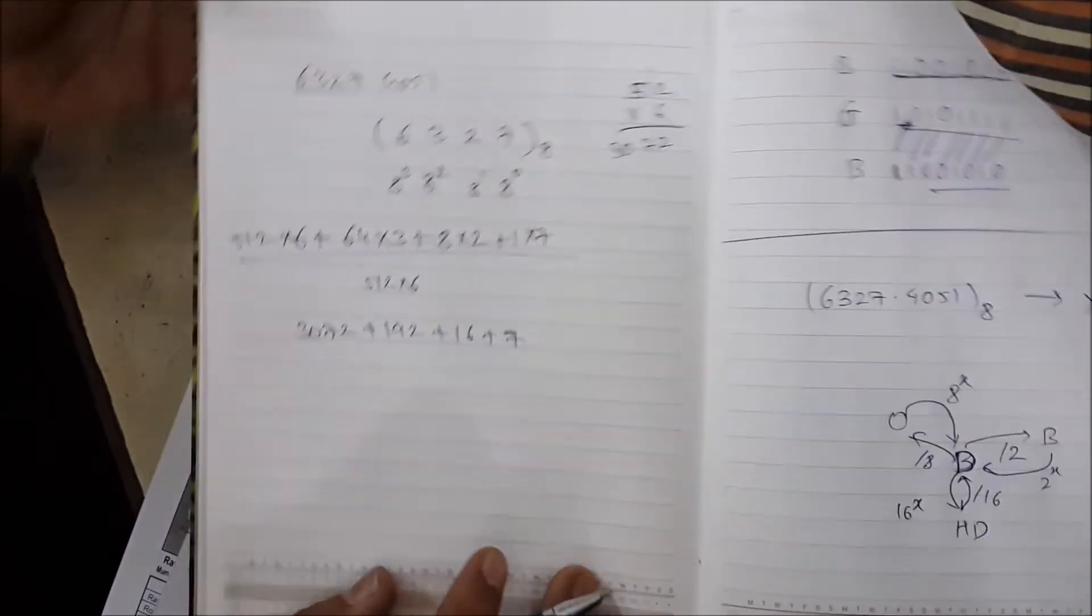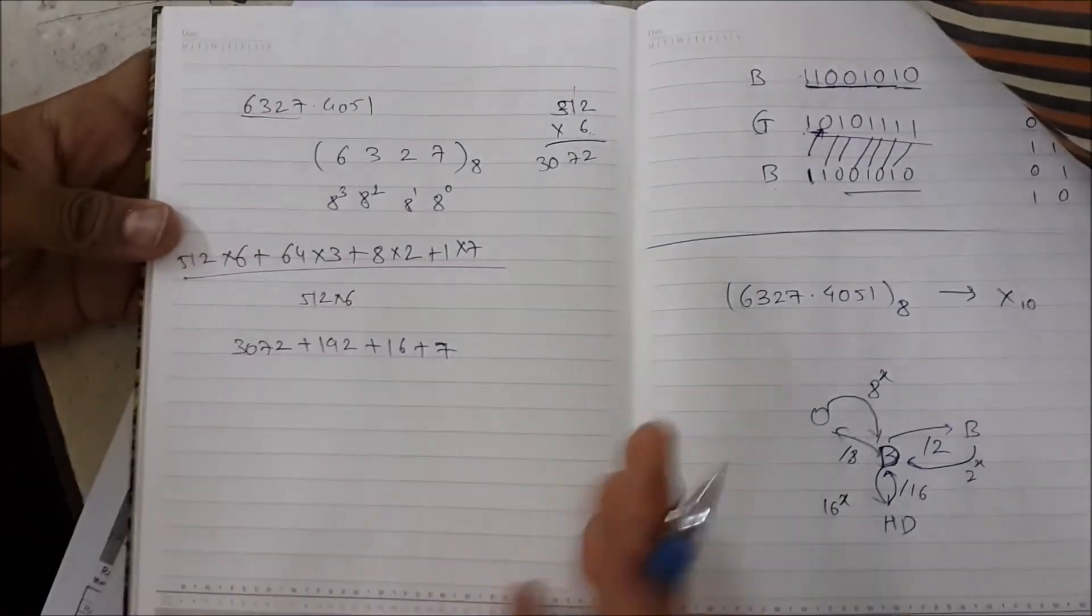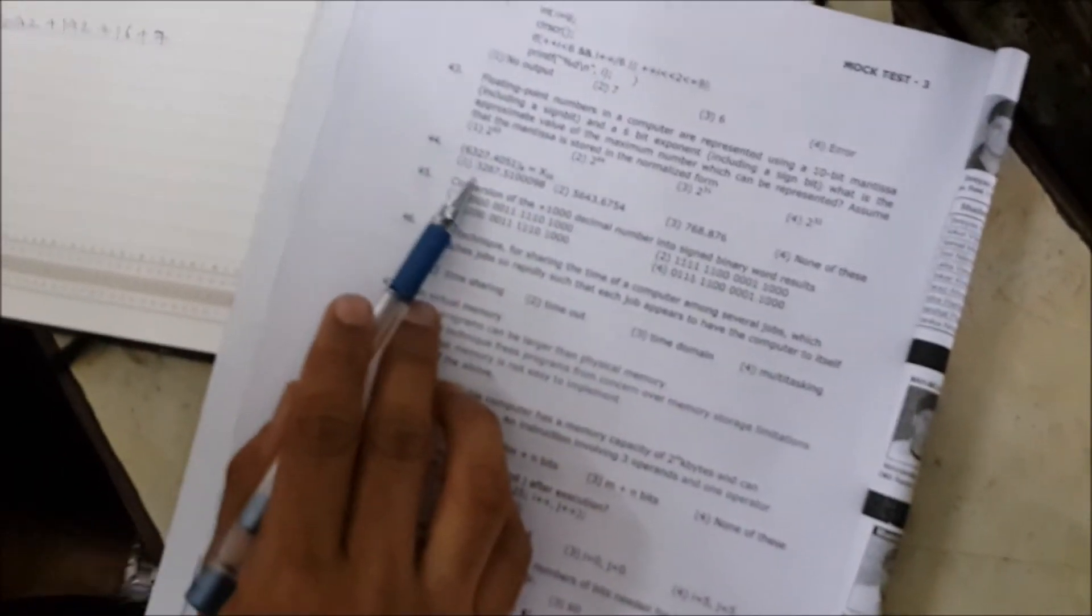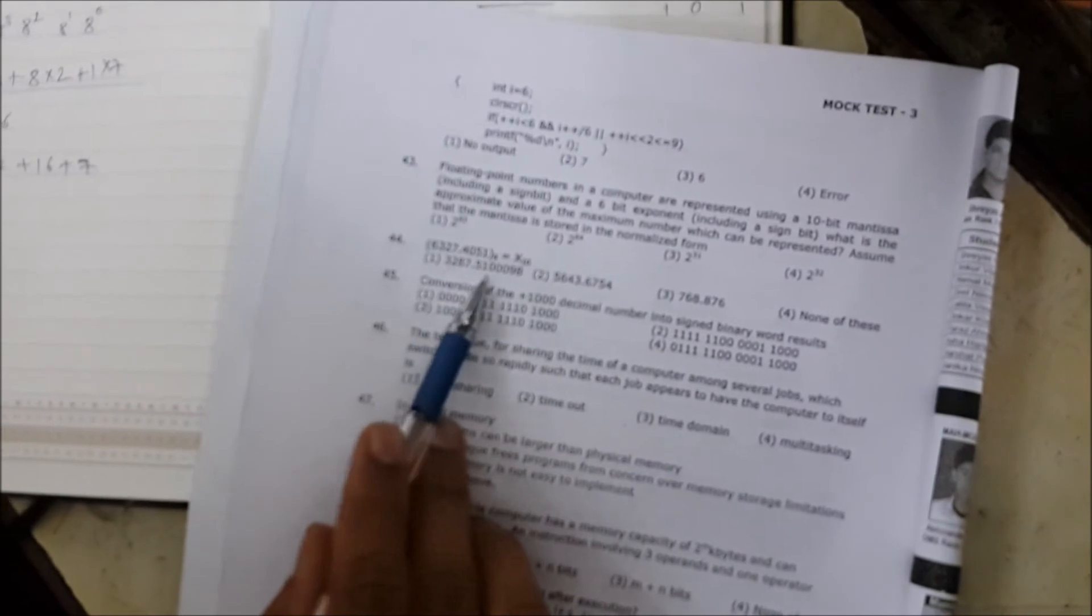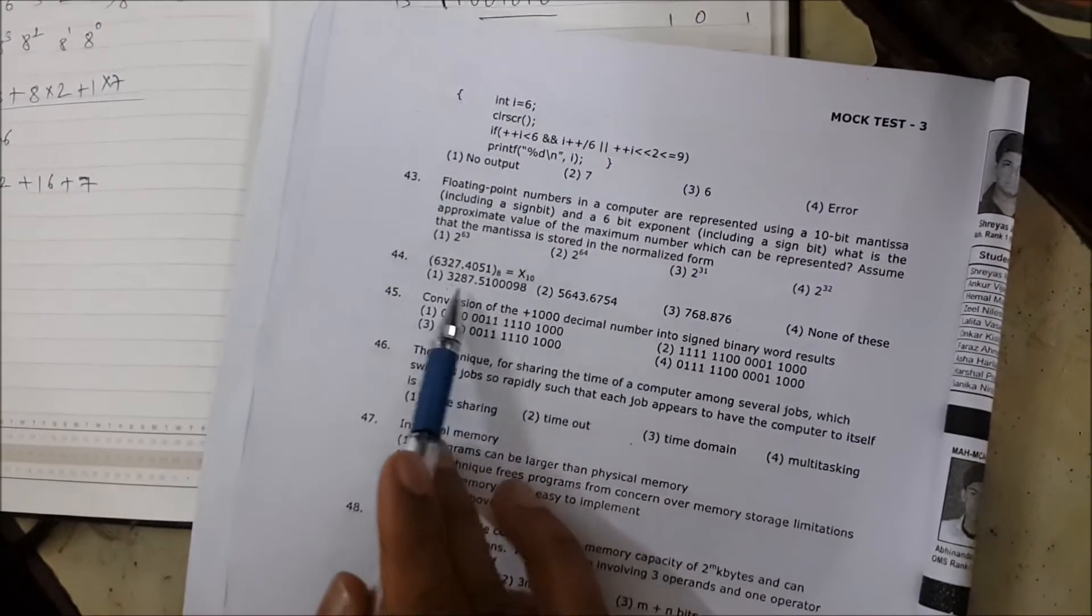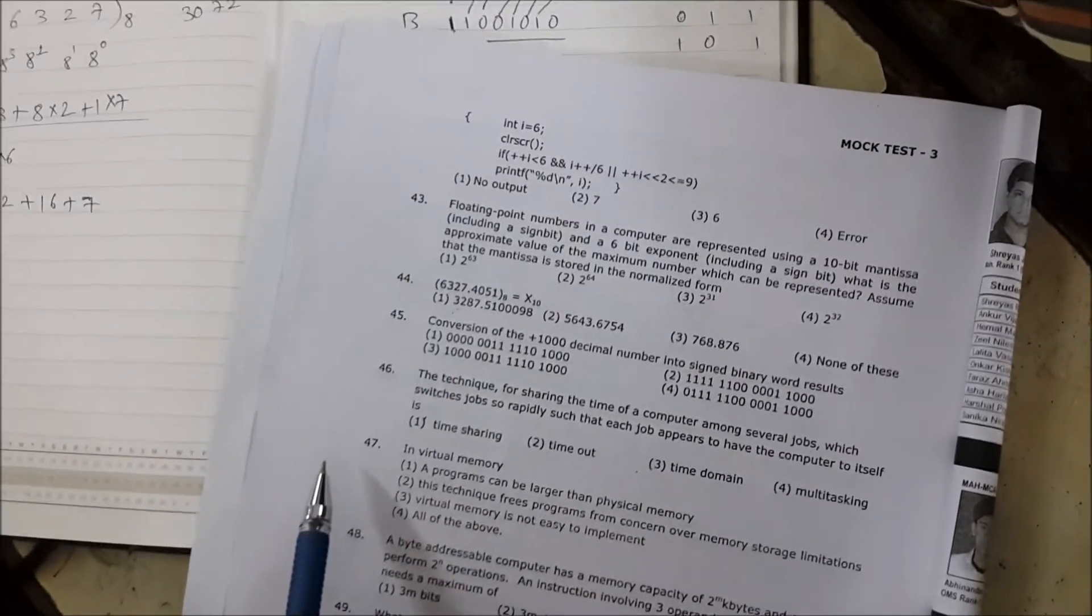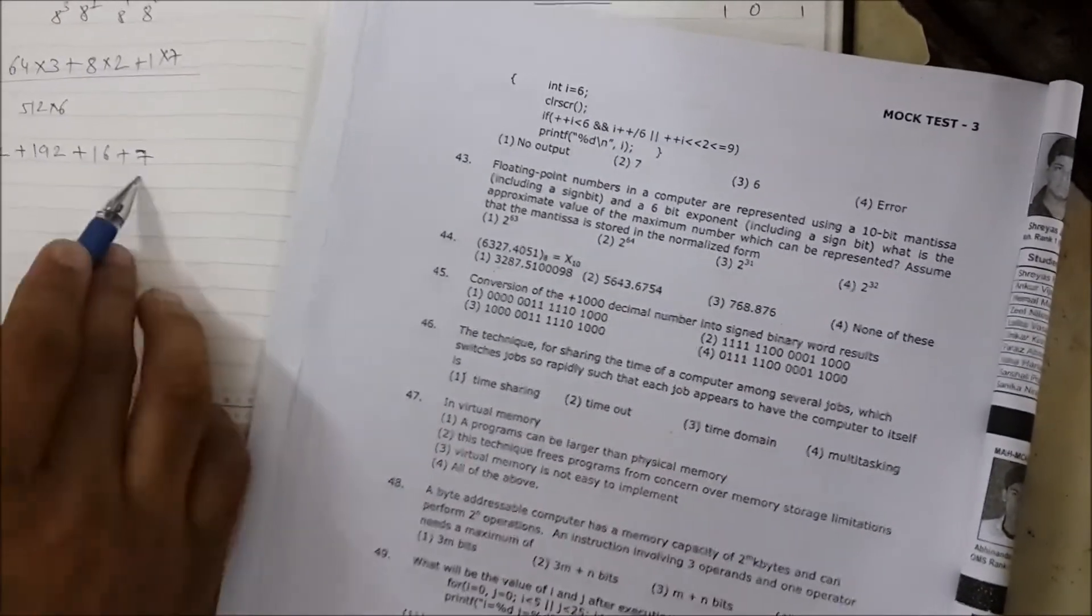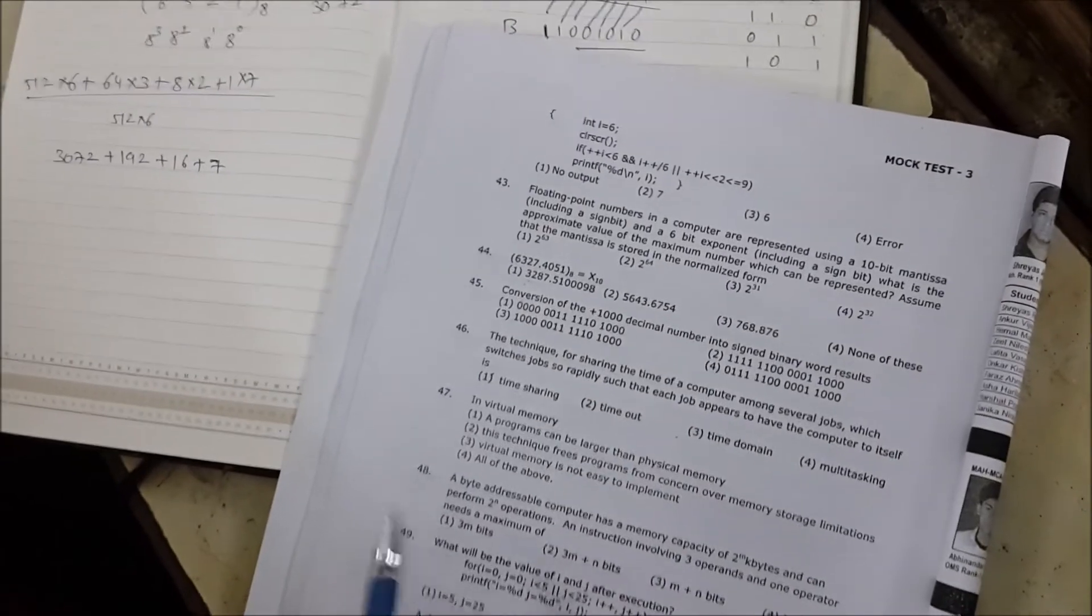And if you calculate, the answer will be around 3200 something. If you compare with the options, the first option is 3287 point something. Since all the options have different values before the decimal point, we can identify the correct answer. You can confirm by calculating this. You will get 3287, and that's the answer.